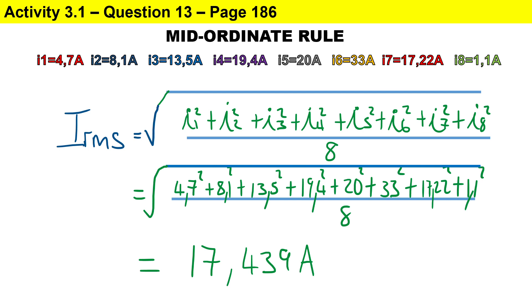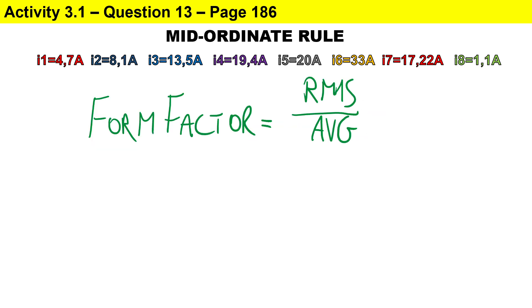To calculate the form factor, it is the ratio of the RMS value to the average value. If you had a perfect sine wave, you should get a ratio of 1.11. We substitute the RMS and average values and we get a ratio of 1.192.